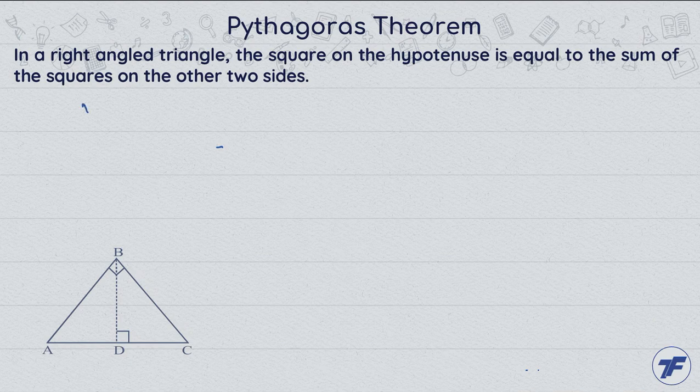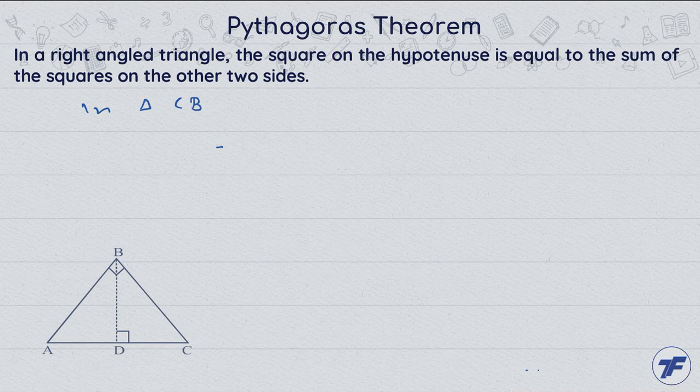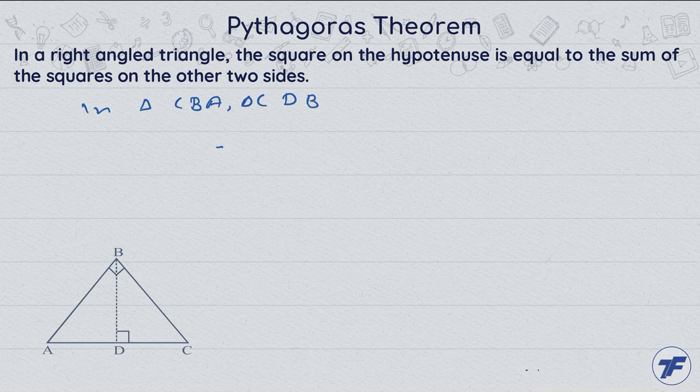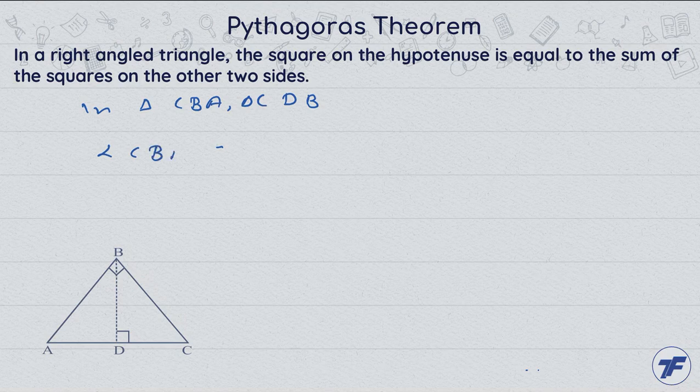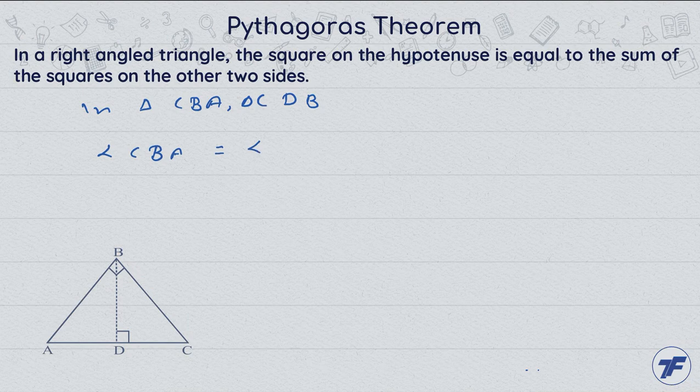In triangle CBA and triangle CDB, again angle CBA equal to angle CDB, each 90 degrees.